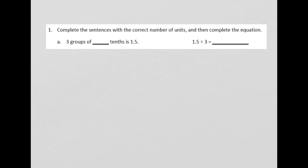So the question says, complete the sentences with the correct number of units, and then complete the equation. In the first one, A, is three groups of blank tenths is 1.5. And then over here it says 1.5 divided by 3. So the first thing that I'm going to do is I'm going to take this number 1.5, and I want to think about it in terms of tenths. So, if I rename the number, and I'm going to use a number bond to show how, if I have 1.5, I have 1 whole and 5 tenths.